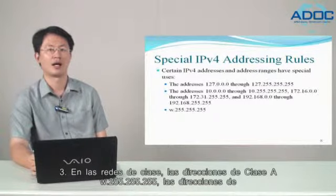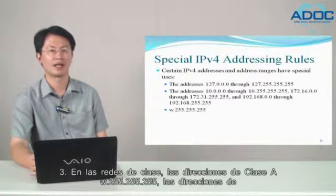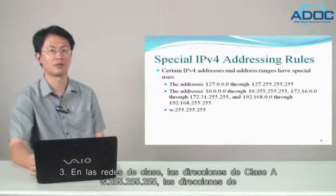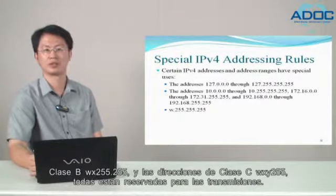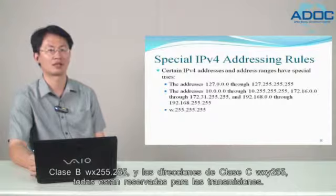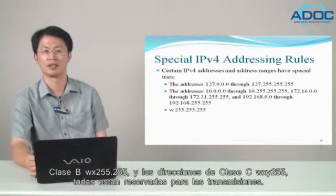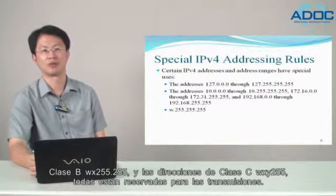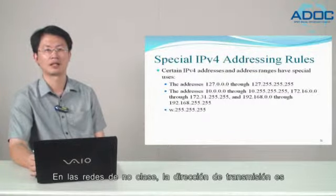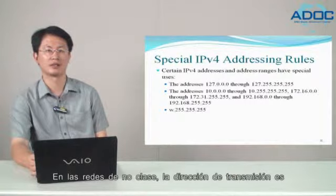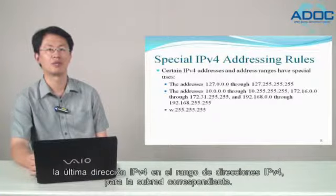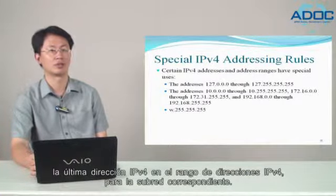Third, on classful networks, the Class A addresses with all host bits set to 255, and Class B addresses with host bits set to 255, are reserved for broadcasts. On non-classful networks, the broadcast address is the last IPv4 address in the range of IPv4 addresses for the associated subnet.